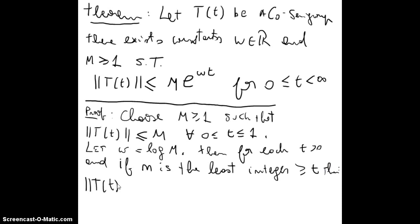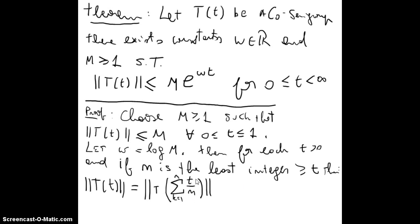The norm of T(t) equals T of the sum of k=1 to n of (t/n). We know that n is bigger than t, and if we sum n times (t/n) we get back to t. By the semigroup property, this equals the product.